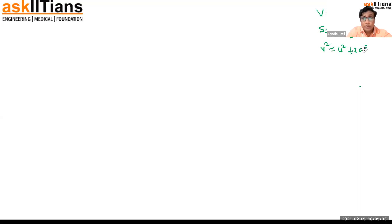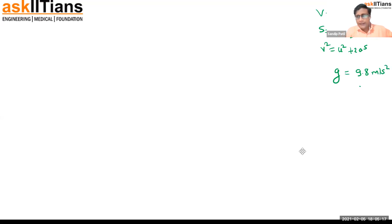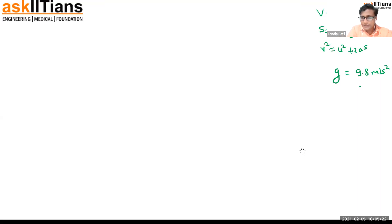We also learned about g, the acceleration due to gravity. Its value is 9.8 meters per second squared. Today we are going to solve an example using g. Remember, g is an acceleration.